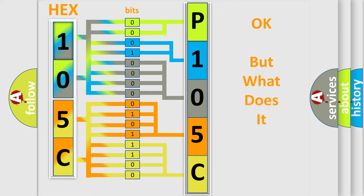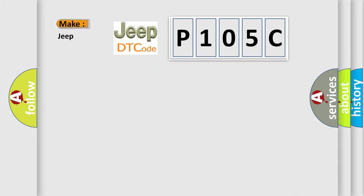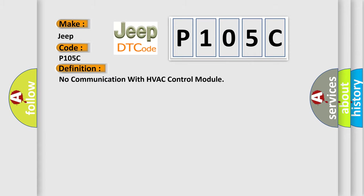The number itself does not make sense to us if we cannot assign information about it to what it actually expresses. So, what does the diagnostic trouble code P105C interpret specifically? Jeep car manufacturers. The basic definition is No communication with HVAC control module. And now this is a short description of this DTC code.